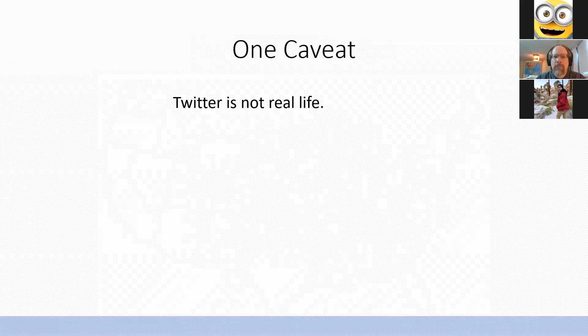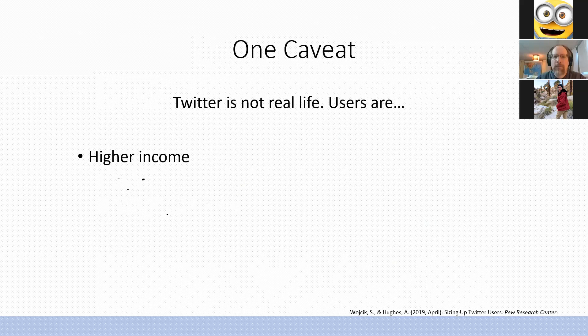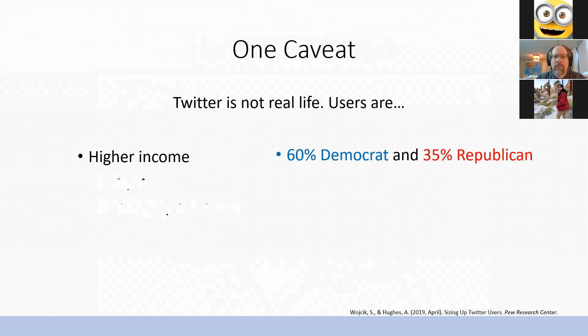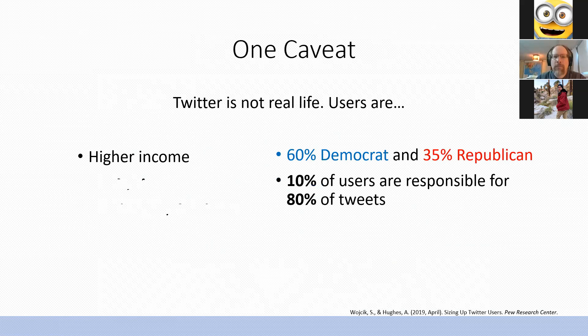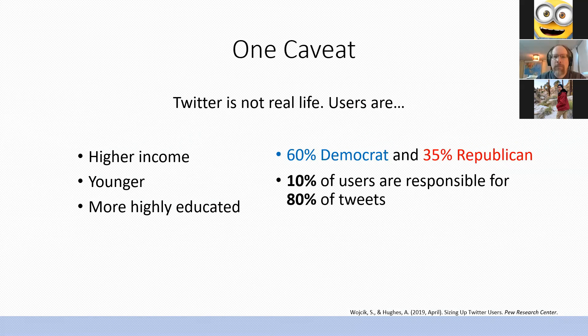One caveat: Twitter is not real life. Twitter users are on average higher income, younger, and more highly educated than the average American. They're also 60% Democrat and 35% Republican. Furthermore, 10% of users are responsible for 80% of all tweets posted, and two-thirds of this 10% are female and highly political, posting about four times as many political tweets as other users. So interpret my results with due caution — I'm using a biased sample from a single social media network.